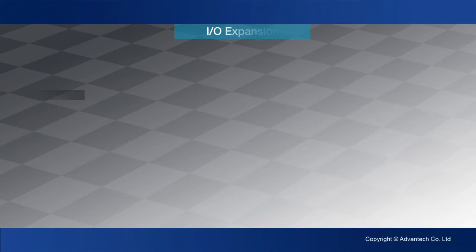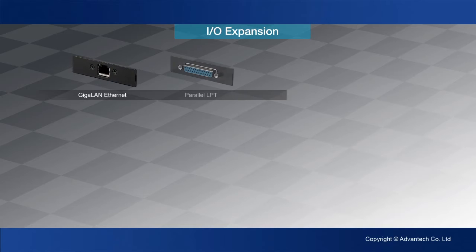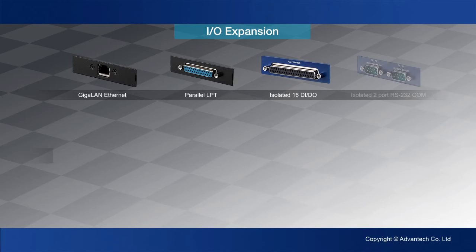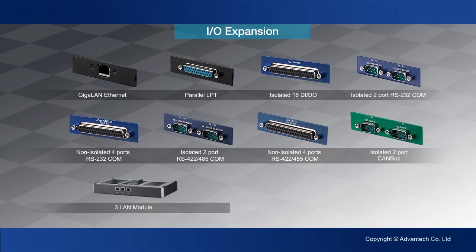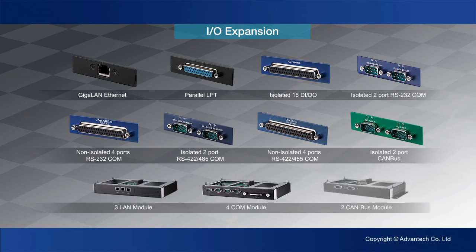These are the different Arc I/O module options. They include GIGALAN, USB, LPT, DIO, COM, CAN bus, and more.